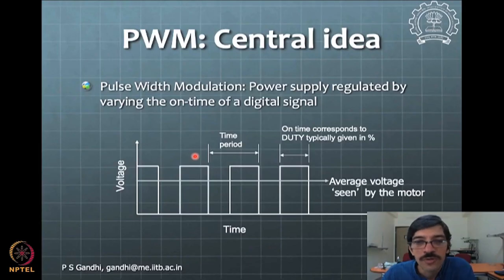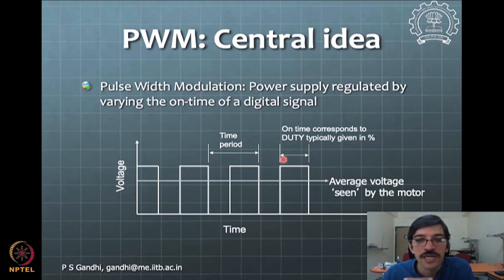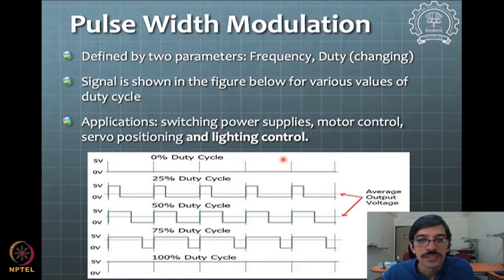So let's begin. As you all know, the central idea of PWM is pulse width modulation — just to flash this thing to make sure you are recollecting your memory. PWM has a time period and a duty which one can change during operation. This is how a basic PWM signal looks. Now we want to generate such a signal, and what is the way one can think of in a microcontroller which generates such signals?